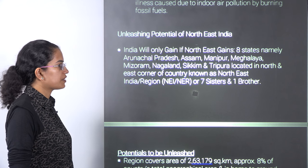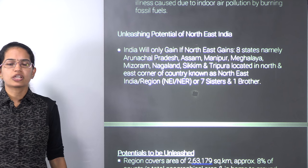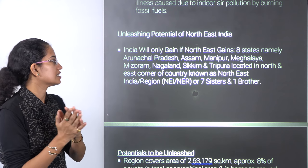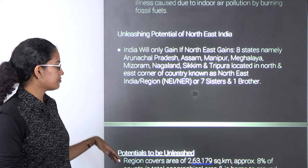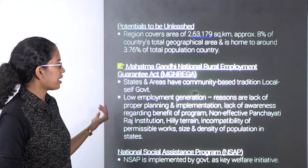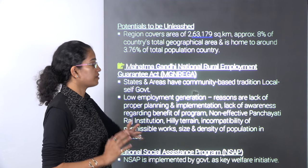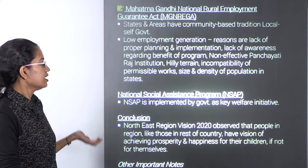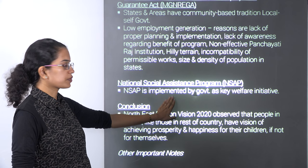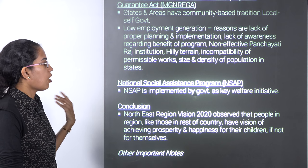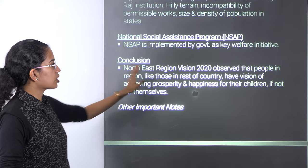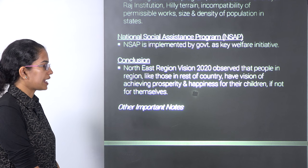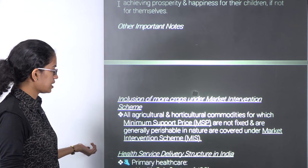For the Northeast — the seven sisters and one brother, with Sikkim considered as the brother — various potential programs have come up. MGNREGA has been working really well specifically in the Northeast areas and hilly terrain. There is also a social assistance program working for welfare in the Northeast, and the Northeast Region Vision 2020 has been observed for prosperity in those areas.